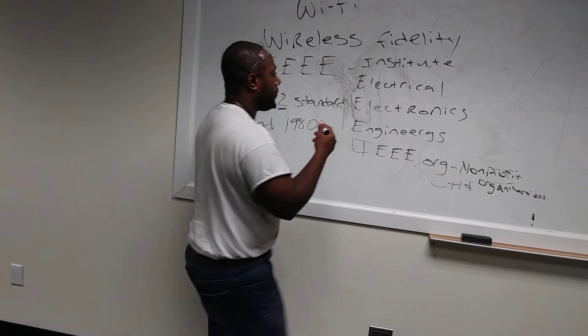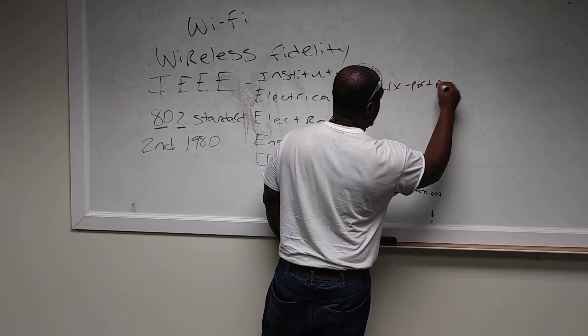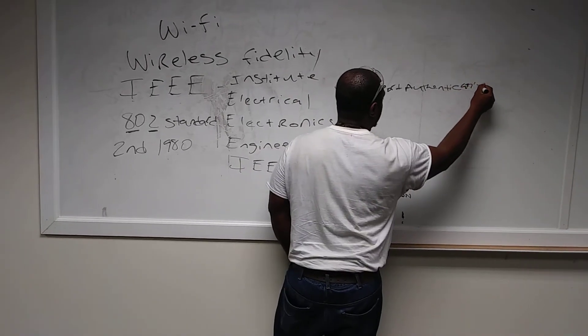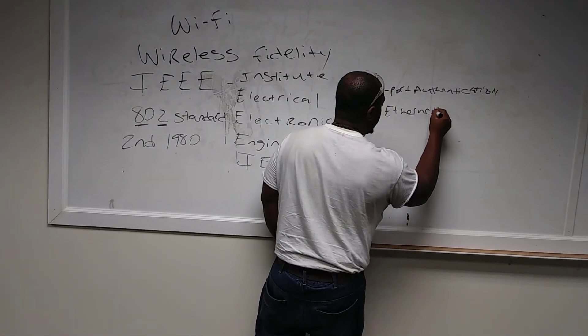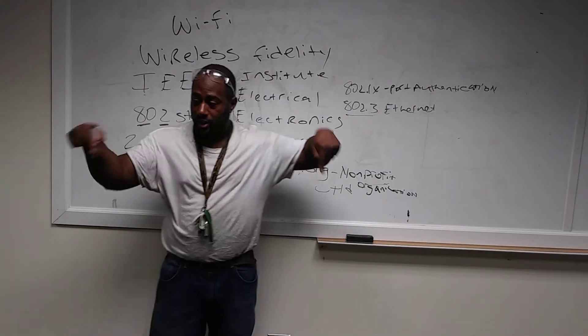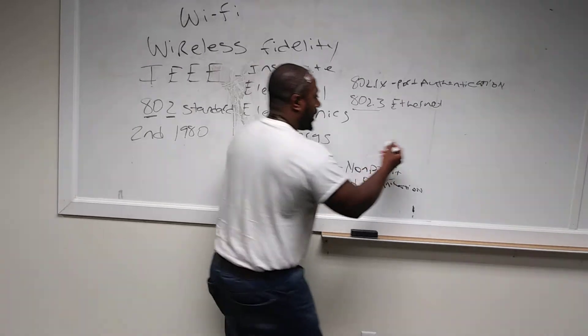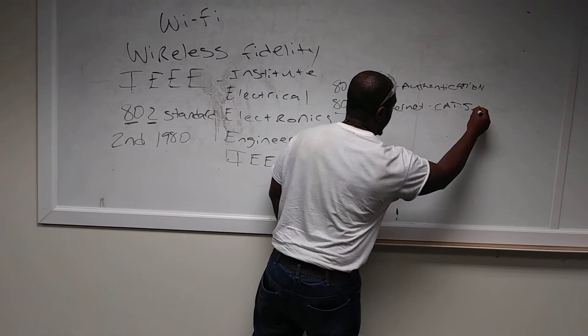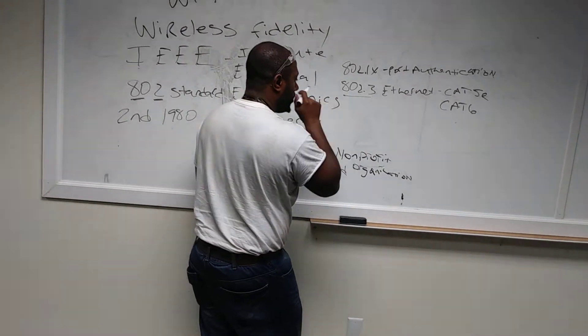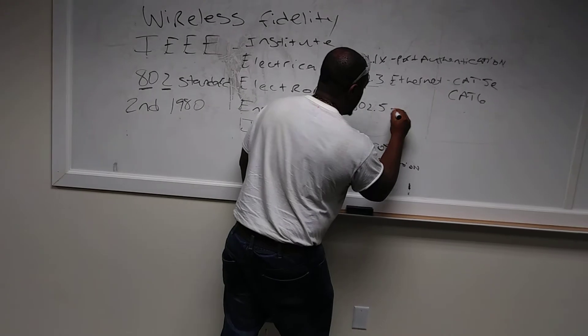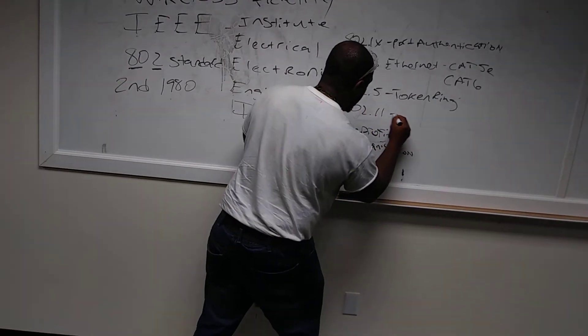I'm going to tell you where we've seen this before. 802.1x was called port-based authentication. We're going to go over that later, another day. 802.3 is an entire body of standards that define something called Ethernet. Ethernet is a cable that's run from point A to point B. Ethernet comes in Cat5, Cat5e, Cat6. 802.5 was a standard called token ring.